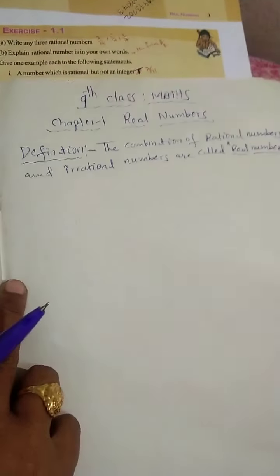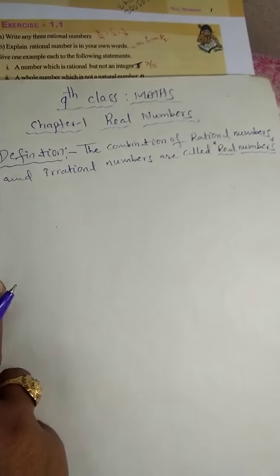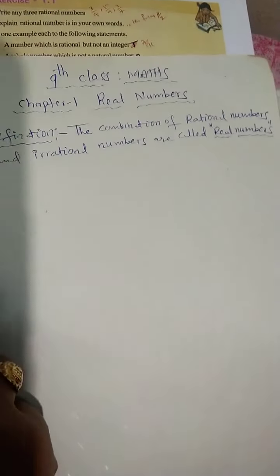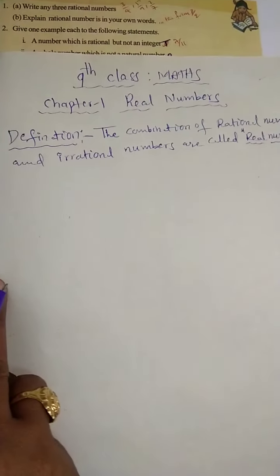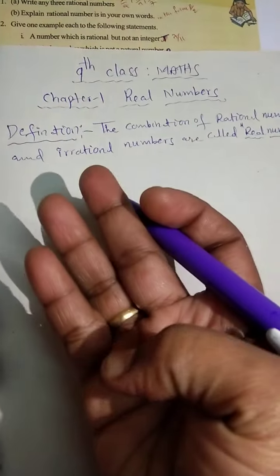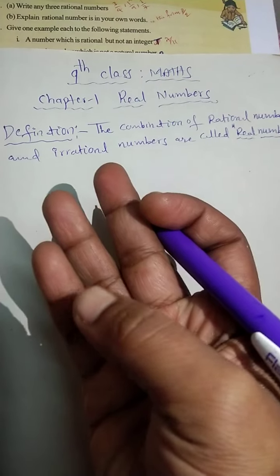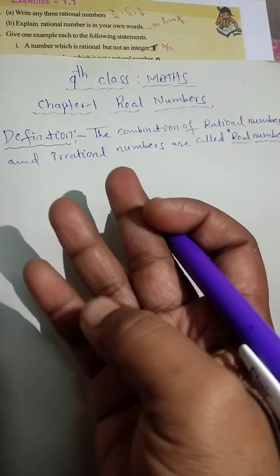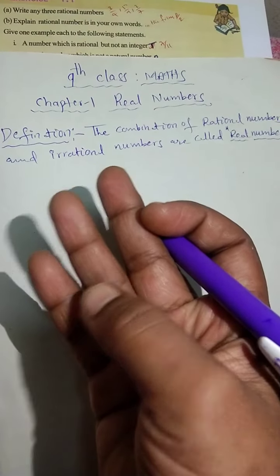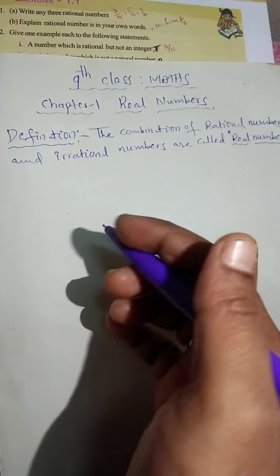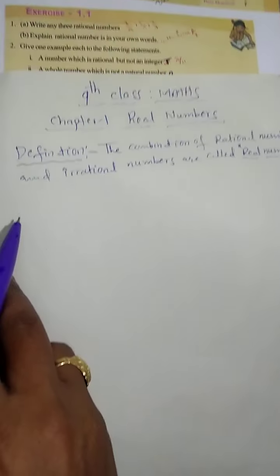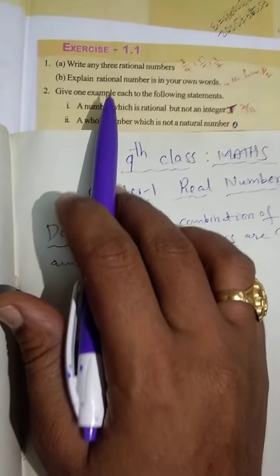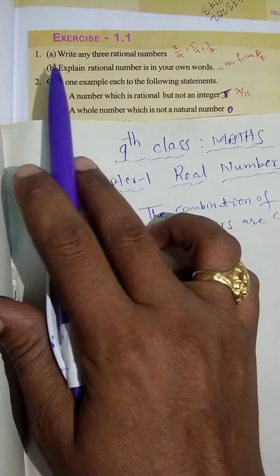In a simple way we can say that definition. Rational numbers consist of integers - it will consist of all the numbers: natural number, whole number, integers, rational, irrational. These are all considered as real numbers. Now I am going directly to exercise 1.1.